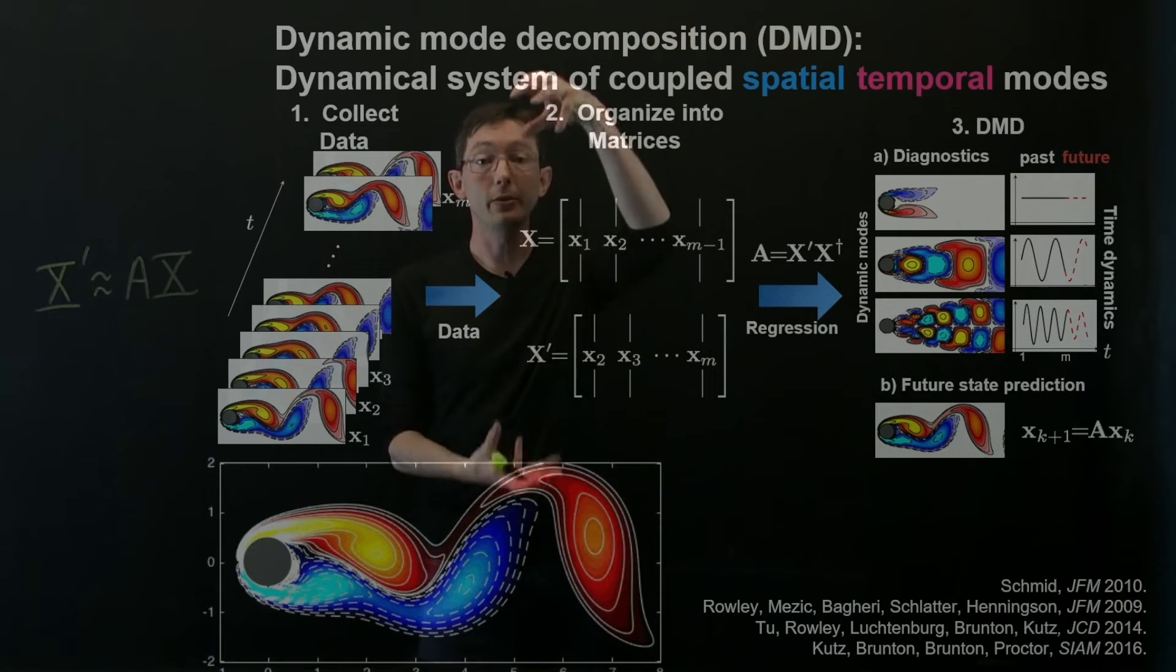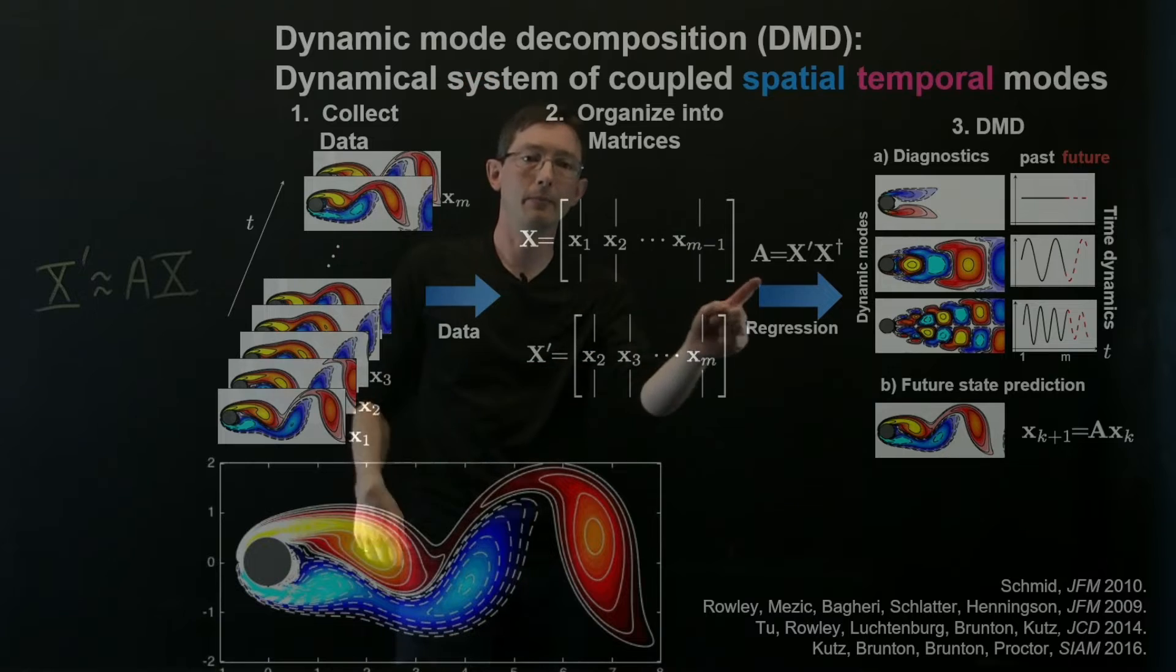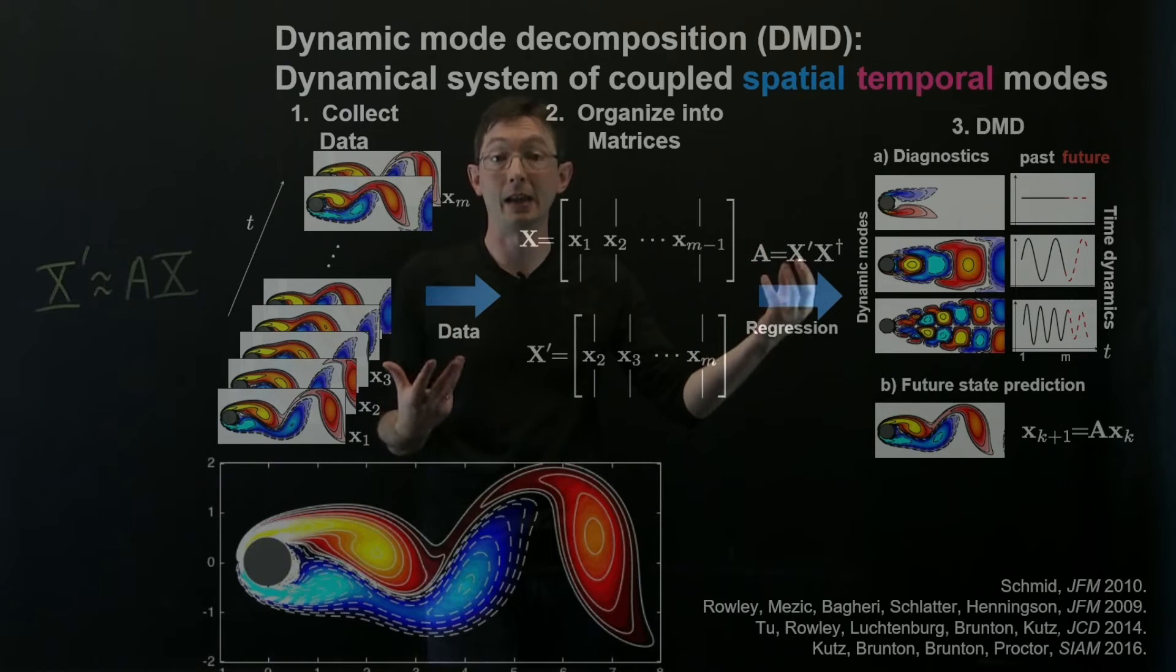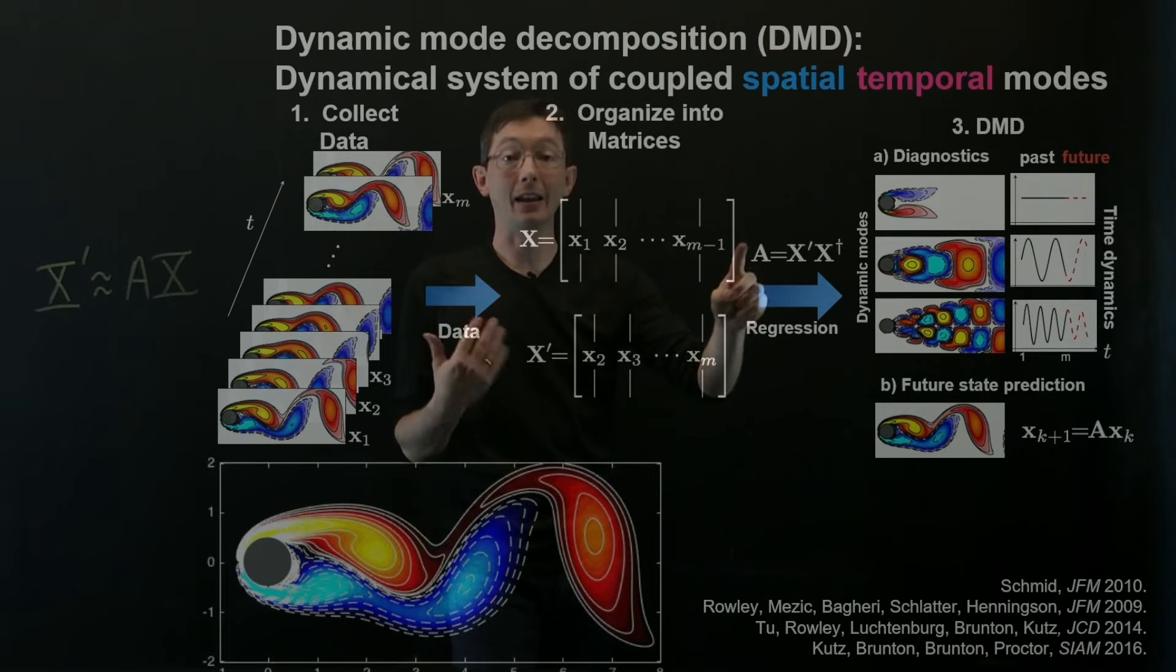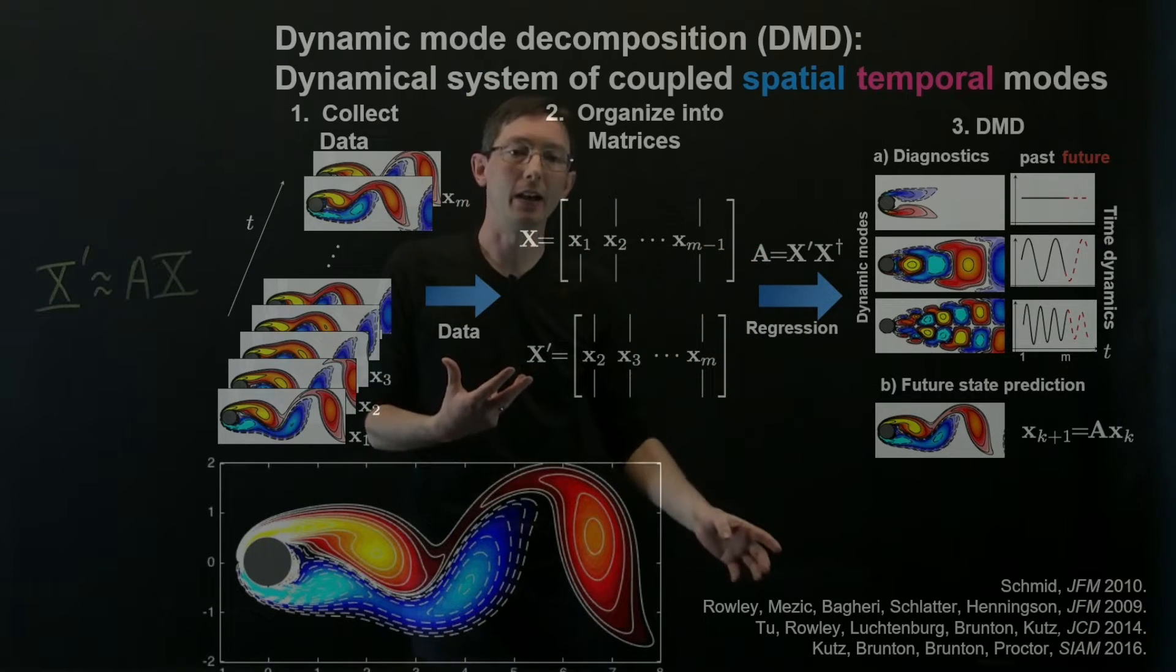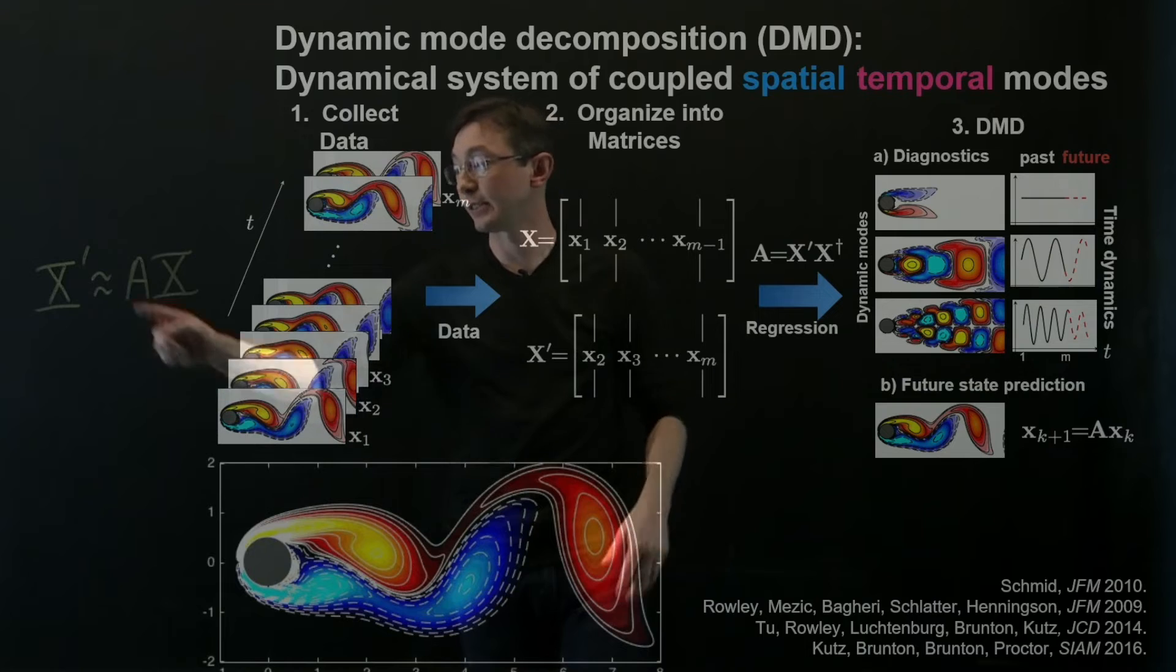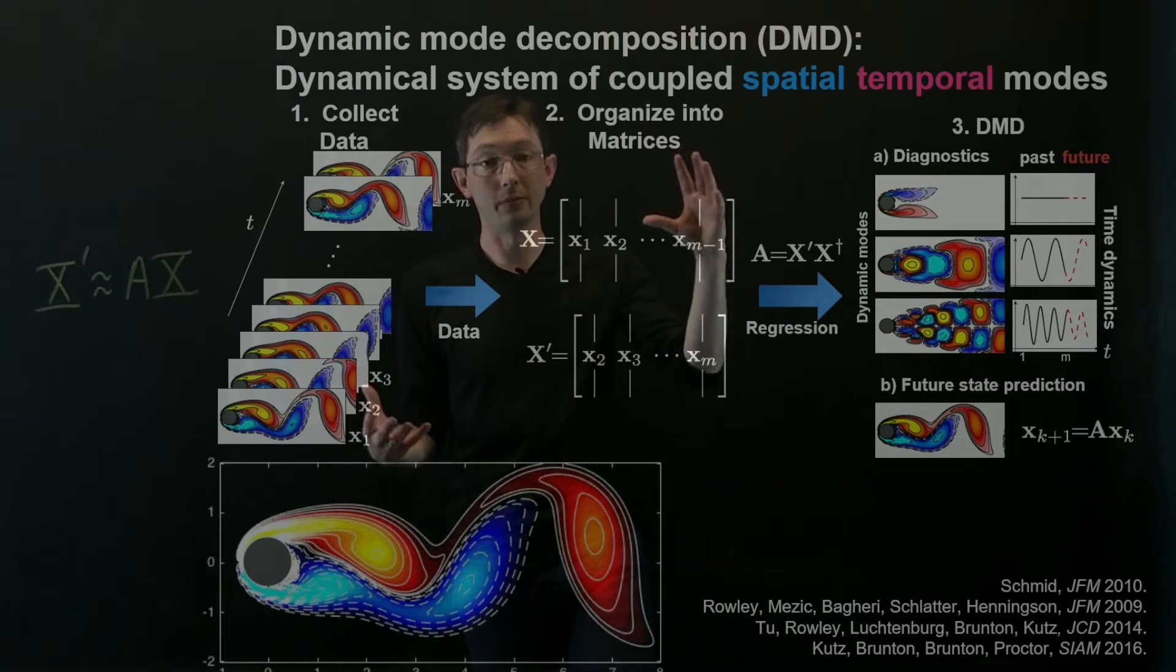That's the framing of Peter Schmidt's paper is basically try to find the best fit linear operator A that best agrees with this data that best maps X into X prime. Now, I told you that we're doing this on really, really high dimensional data where maybe I have a million degrees of freedom, a million spatial measurements in my column vector. Then this A matrix is a million by million matrix. So it has a trillion elements. You definitely don't want to actually compute this A matrix, let alone look at things like its eigenvalues and eigenvectors. So what the DMD actually does is it approximates the leading eigen decomposition, the leading eigenvalues and eigenvectors of this A matrix without ever actually computing the A matrix.